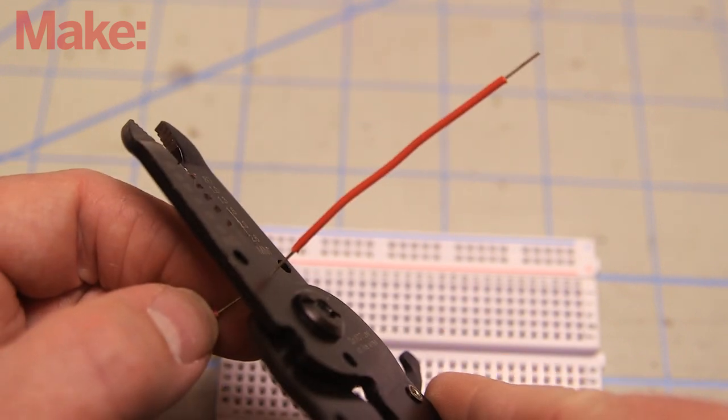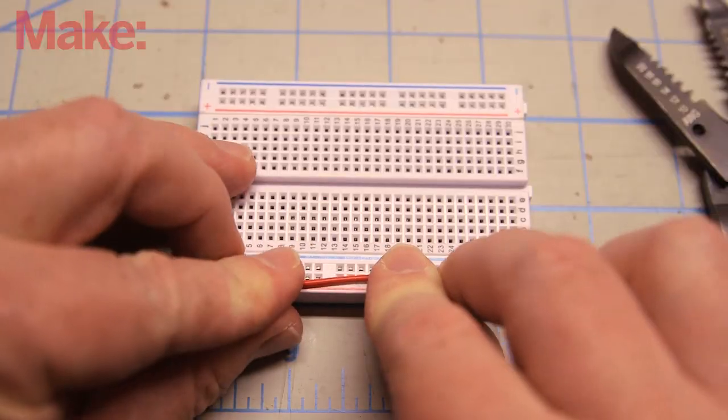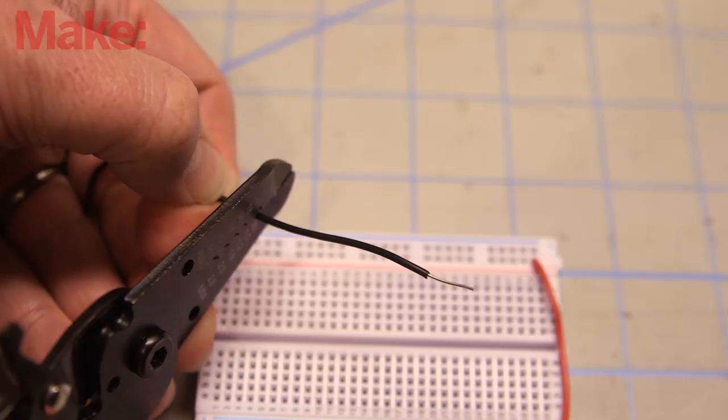And then bend the stripped ends. Your jumper wire should fit precisely.